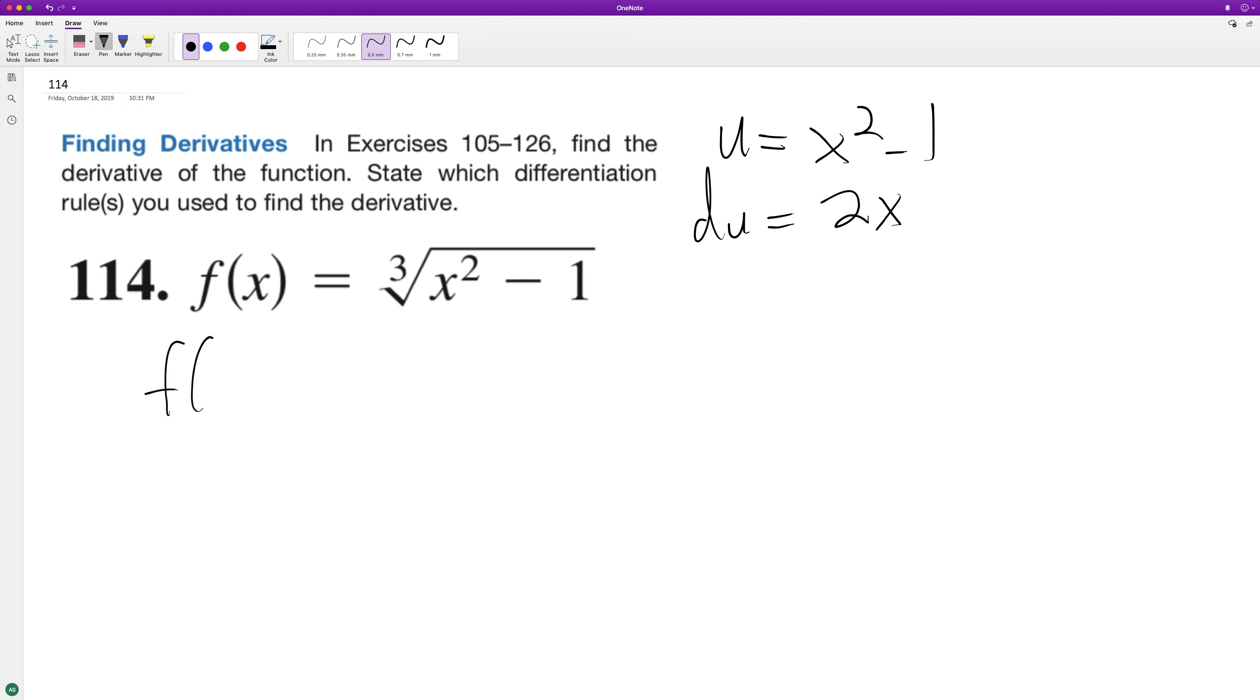We'll set u equal to x squared minus 1 and du will be equal to 2x. So here we'll set f of u is equal to u. This is the same thing as u raised to the 1 third.